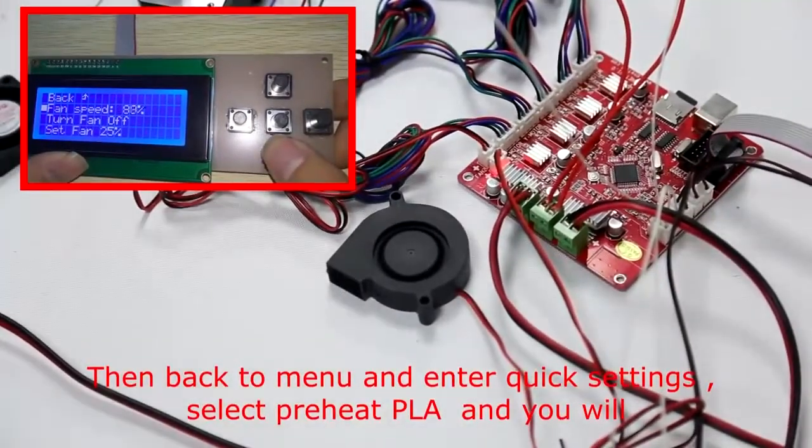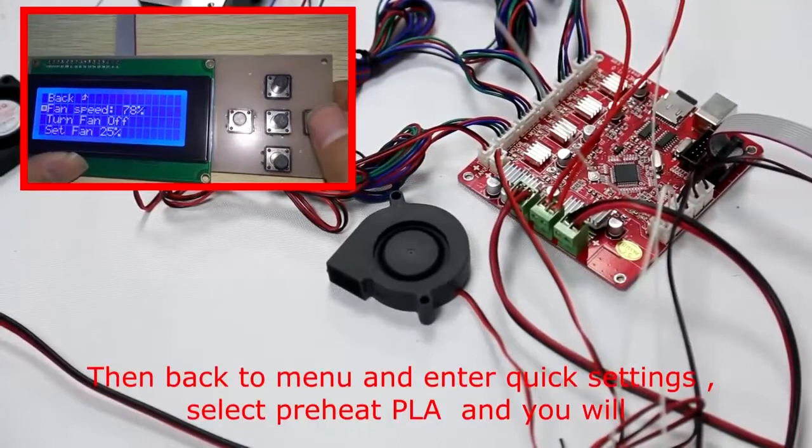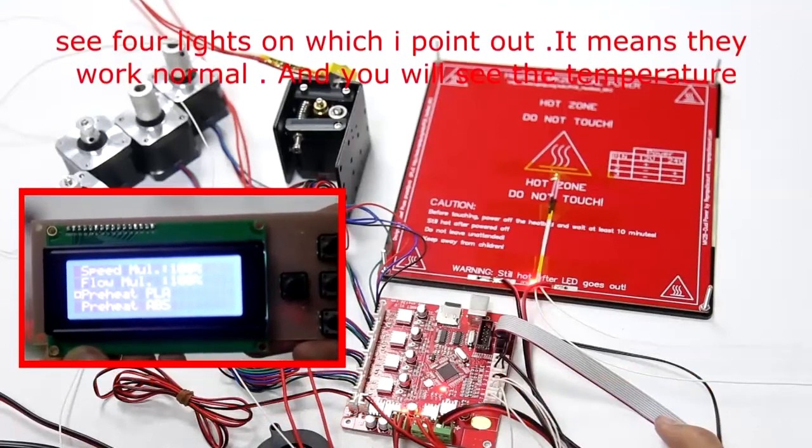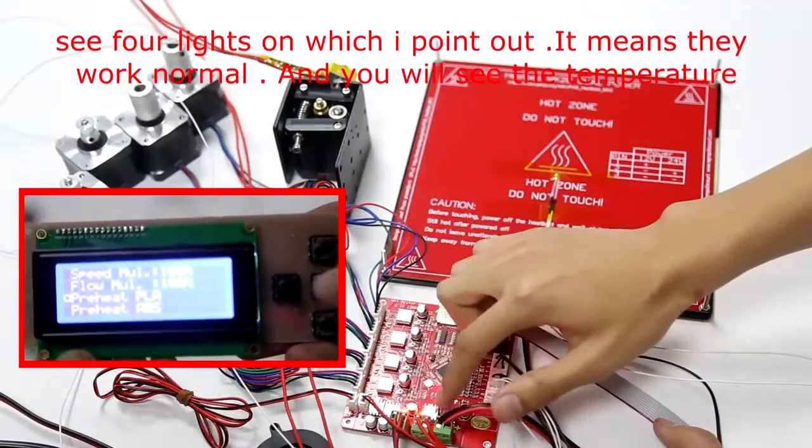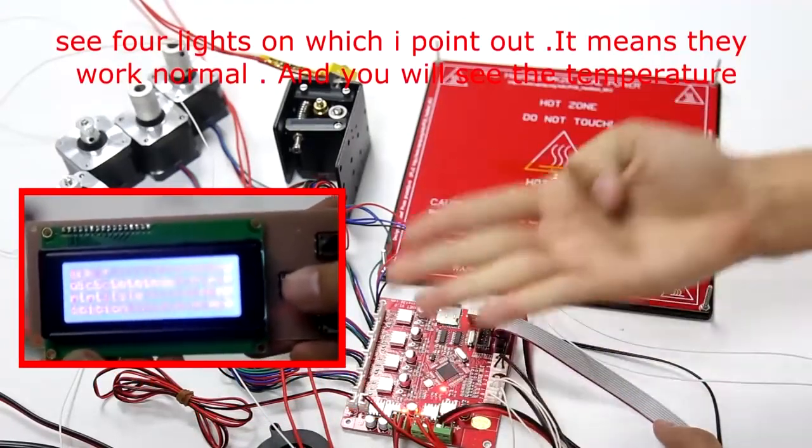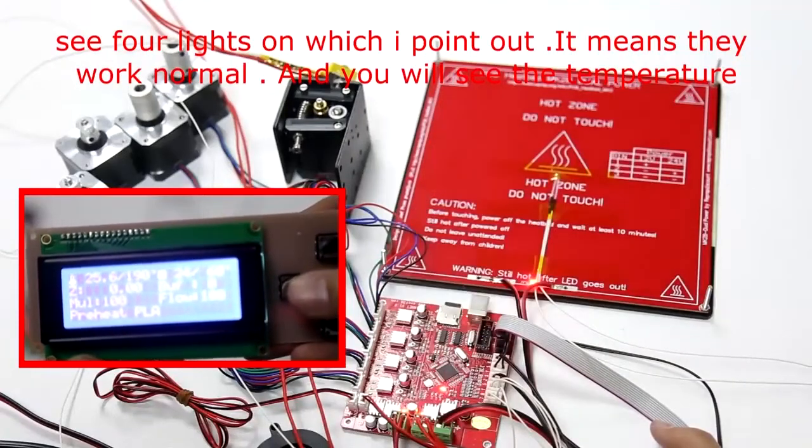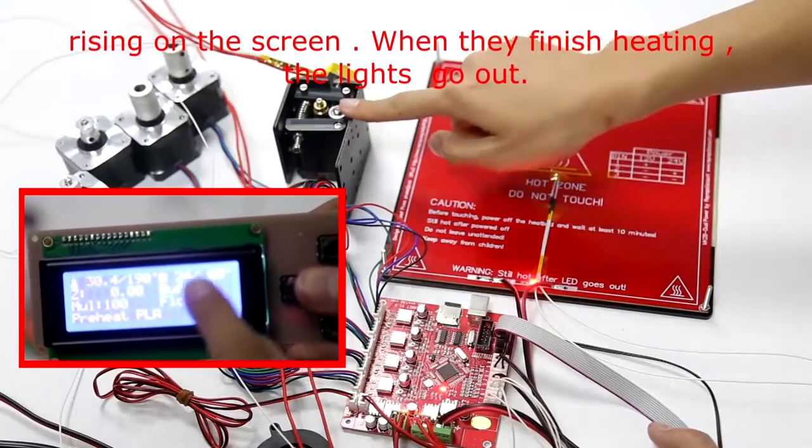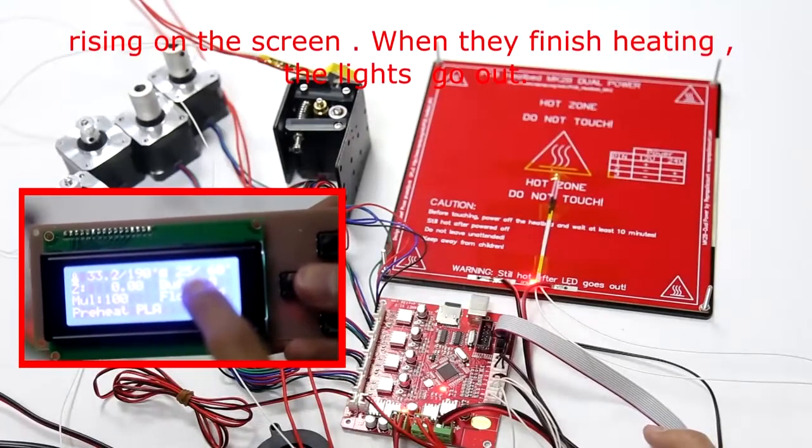Then, back to menu and enter quick settings. Select preheat PLA and you will see four lights turn on, which I point out. It means they work normally. And you will see the temperature rising on the screen. When they finish heating, the lights go out.